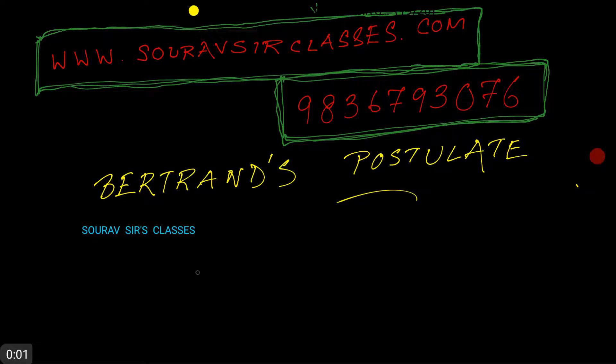Hello and welcome to Sourav Sir's Classes. In this video, we learn about Bertrand's postulate. Now we have seen that the sequence of prime numbers 2, 3, 5, 7, dot dot dot is infinite, right.